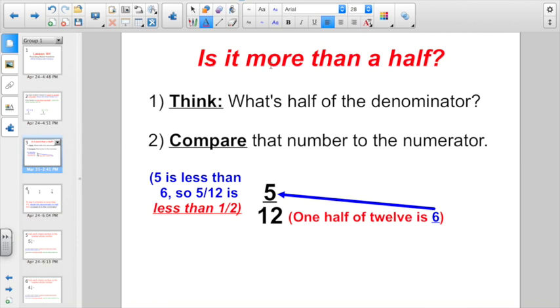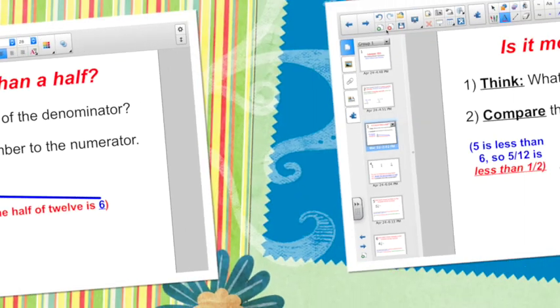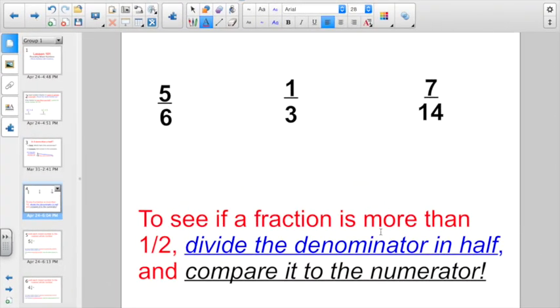And just a bit of review here, how do you know if it's more than a half? Remember, first you have to think about what's half of the denominator. Here I have 5/12. The denominator is 12. So one-half of 12 is 6. And then you compare that to the numerator. I'm going to think half of 12 is 6. How does that compare to the numerator? Well, 5 is less than 6. So 5/12 is less than a half. So to see if a fraction is more than a half, divide the denominator in half and compare it to the numerator.